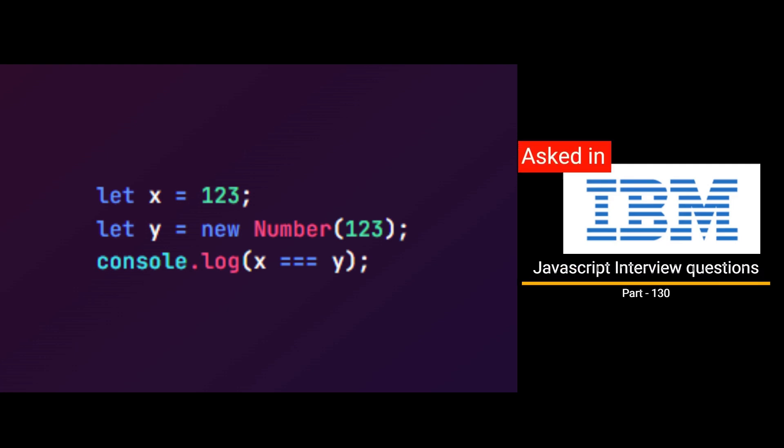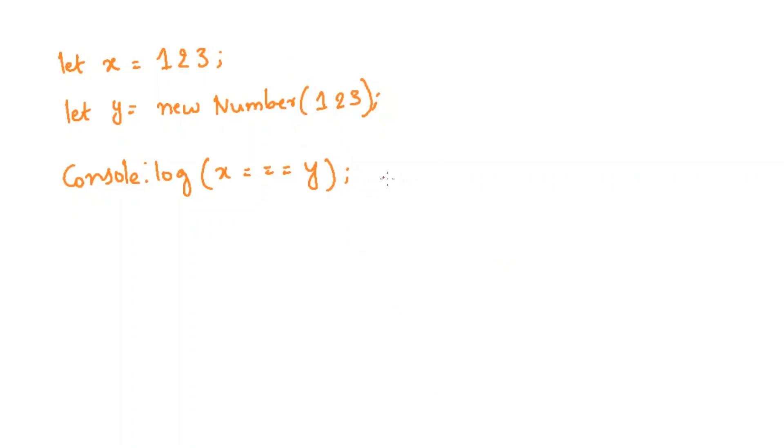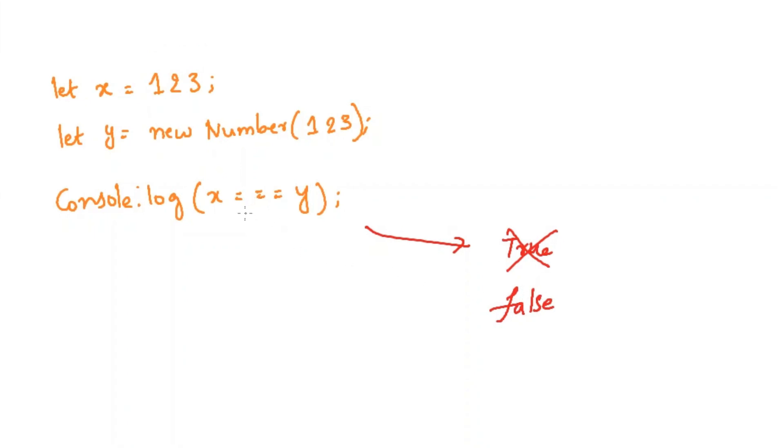Hi sir, IBM has recently asked this question. Most of the developers will think that the output will be true, but no, the output will be false here. Here we are using strictly equal to operator between x and y.